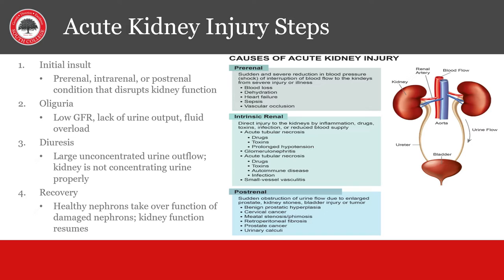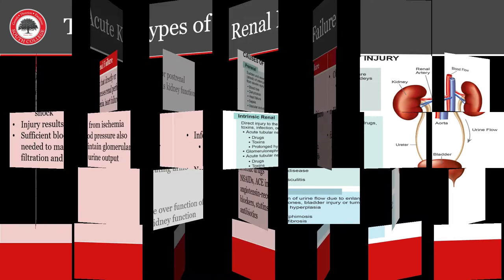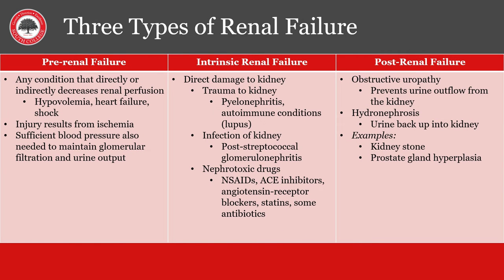Acute kidney injury can be pre-renal, post-renal, or intrinsic. The initial stage is where the insult begins, then oliguria can commence as the GFR slows down and fluid overload begins. Diuresis will then happen and the kidneys are getting rid of fluid but not concentrating the urine properly. Recovery should then happen as the kidney heals. Pre-renal failure is before the kidney, so it deals with dehydration or hypovolemia. It can also come from fluid immobilization like in CHF or cirrhosis where the fluid third spaces and cannot be filtered by the kidneys. Intrinsic is damage to the kidney itself.